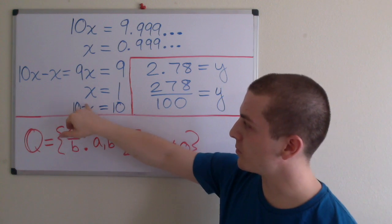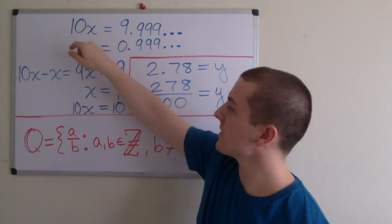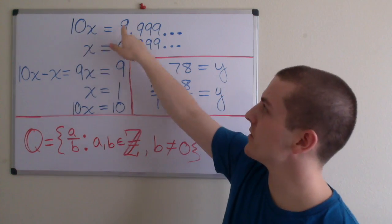If we multiply both sides by 10, we have 10x equals 10. So now we have 10x equals 10, but 10x also equals 9.99 repeating.